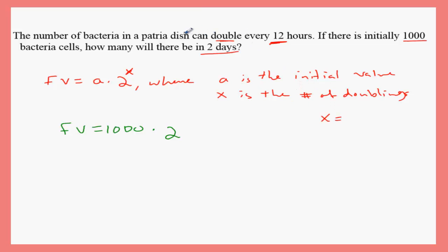Let's find x. What is x? x is the number of doublings. If the dish doubles every 12 hours and you need to find after two days, which you need the two days - of course, we cannot deal with hours and days. You must convert one of them into the other, so let's convert from days to hours. Two days is the same as 48 hours.